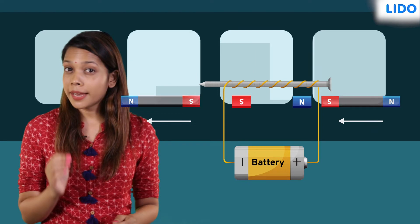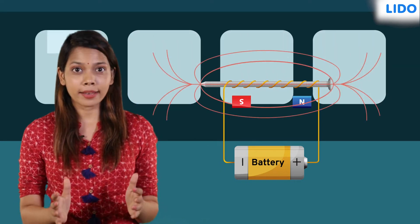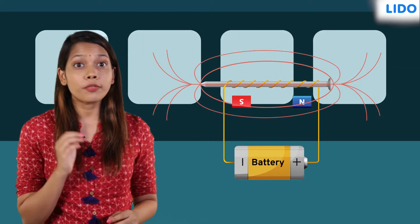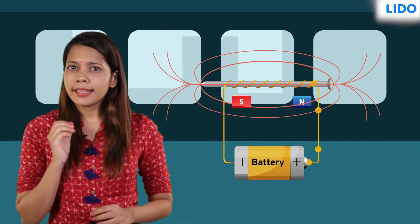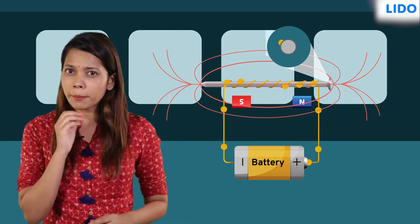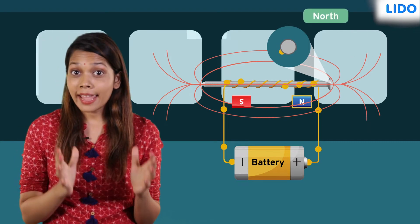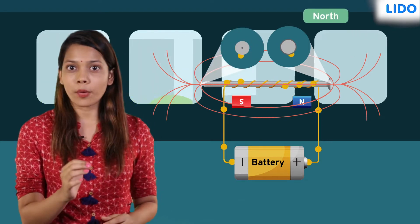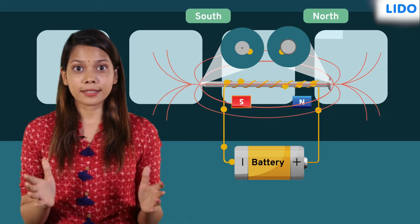This means that the magnetic poles of an electromagnet depend on the direction of the current in the coil. The end of the electromagnet where the current flows anticlockwise becomes the north pole and the end where the current flows clockwise becomes the south pole.